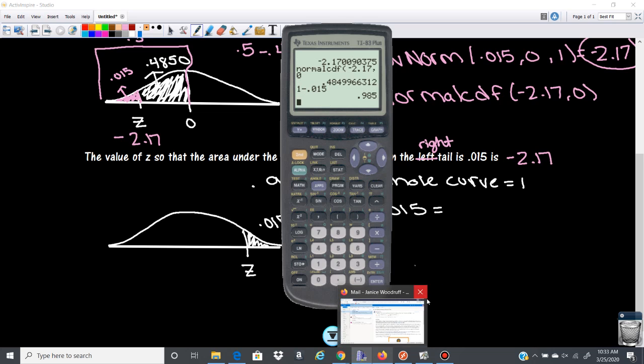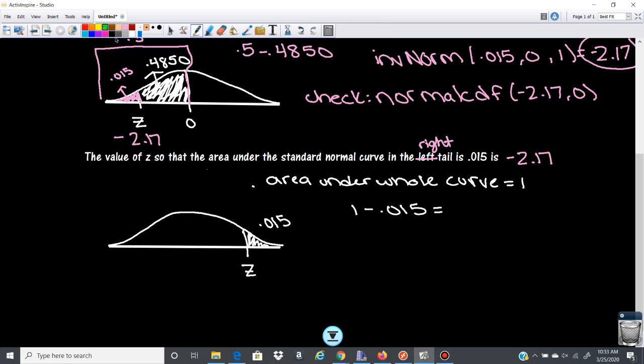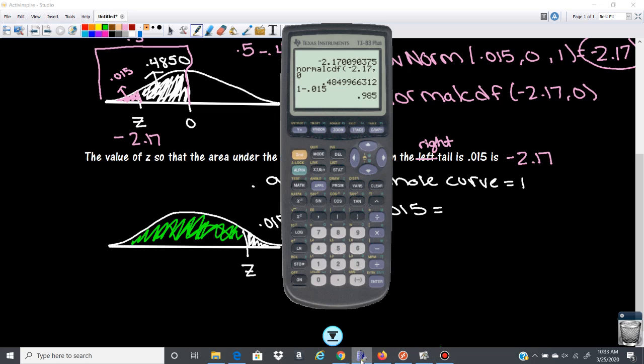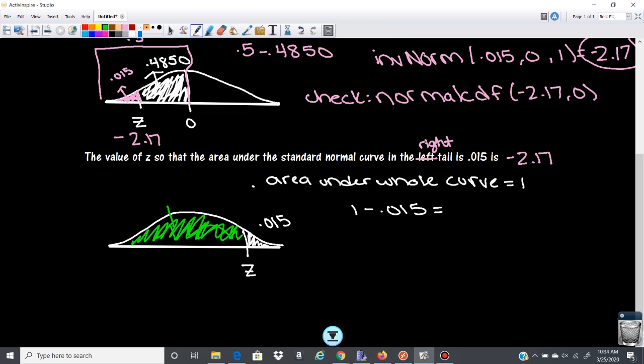So that should give us 0.985. All right, so if I come to my curve here, we can draw this in green. Okay, this whole area here that we're missing is, what was it again? 0.985. So if I want to find the z-score, I'm going to go inverse norm.